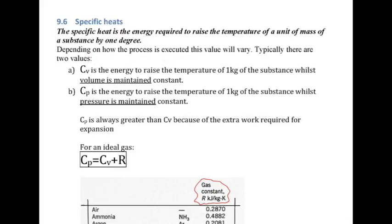If you are raising the temperature of one kilogram of the substance while maintaining constant volume, the value is referred to as C subscript V — specific heat at constant volume. Conversely, if you maintain constant pressure, it yields a different value, C subscript P. We're going to use CV and CP extensively, and the two differ. However, CP is always greater than CV, because extra work is required to expand the gas.